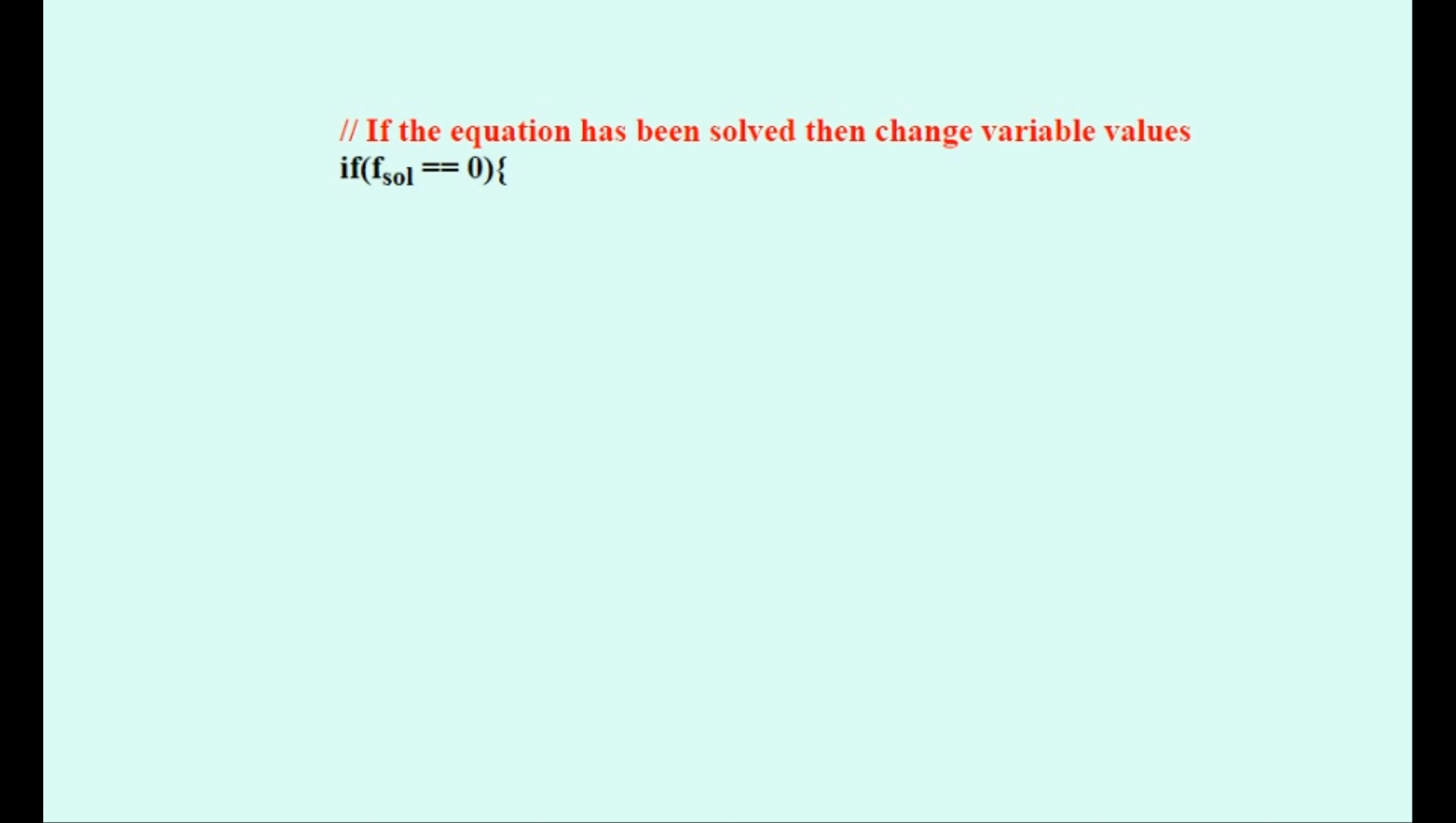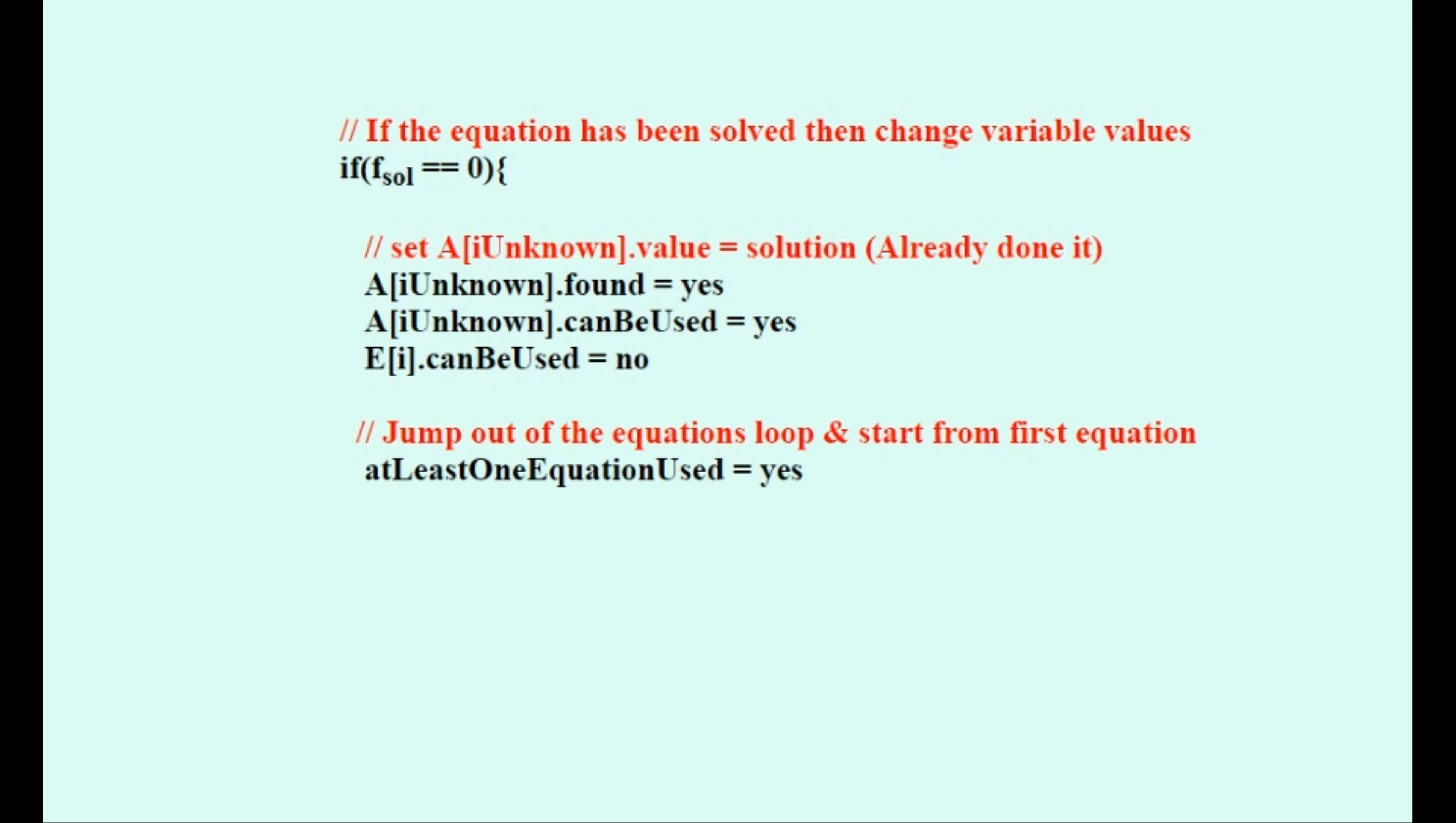We'll set this variable to have the new value and mark it in as having been found and also mark off the equation as having been used so it can be ignored when the program passes by it again. And we can set this Boolean variable to yes so that we can jump out of the equations loop and start from the beginning of the list of equations so as to avoid the non-linear equations at the bottom. And we'll close all the loops with these curly brackets.